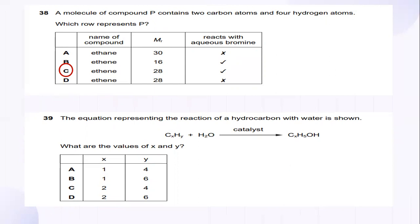The equation representing the reaction of hydrocarbon with water. What is the chemical equation for the hydrocarbon? Definitely C2H4. So, X is actually 2, H is actually 4. So, the answer suitable here is C.